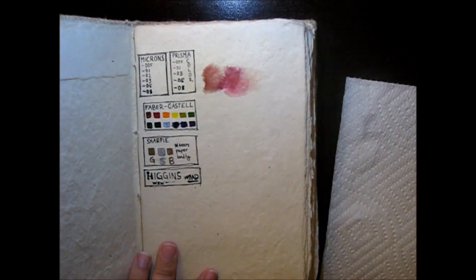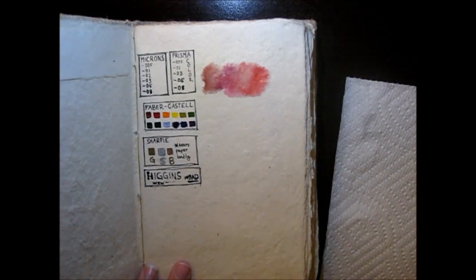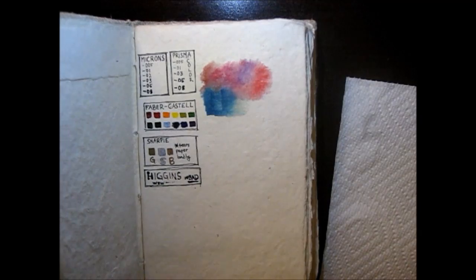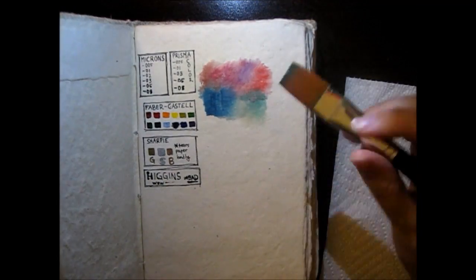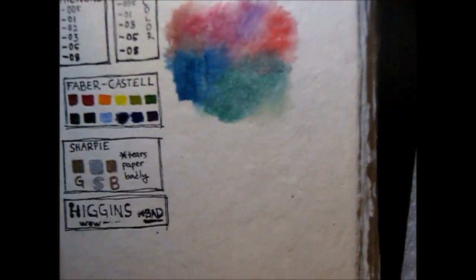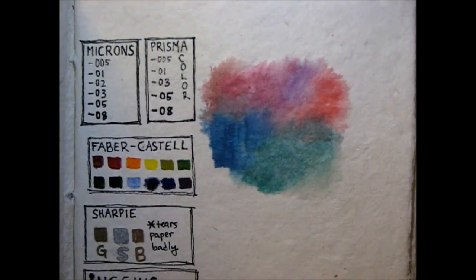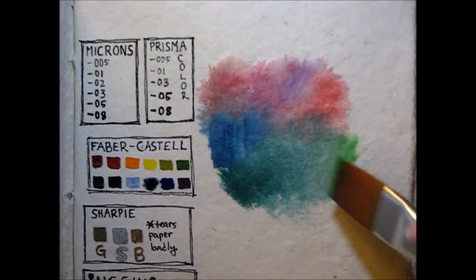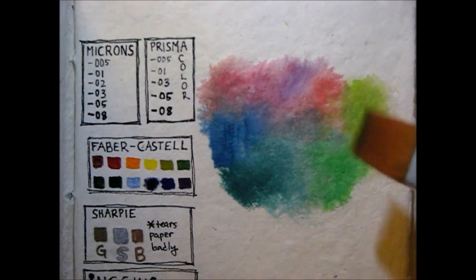So this is when I'm pulling out the watercolors. They instantly soaked through the paper. It's really easy to see when it's sped up like this. I lay down the color and immediately it's just gone.